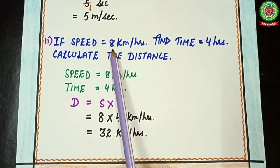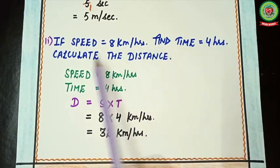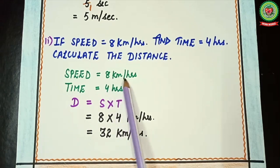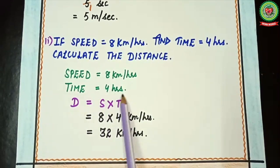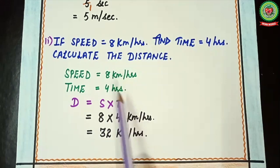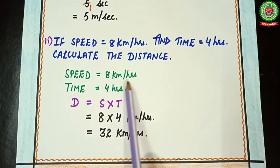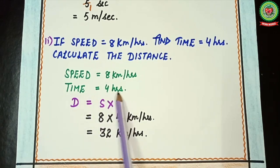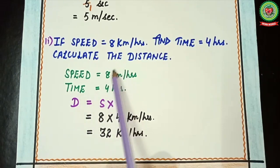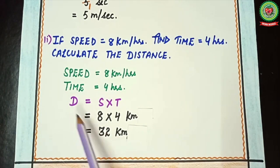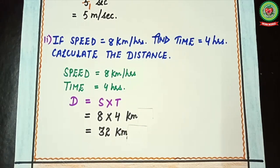Second example: if speed equals 8 kilometer per hour and time equals 4 hours, calculate the distance. Given: speed = 8 km/h, time = 4 hours. Distance = speed multiplied by time = 8 multiplied by 4. The unit for speed is km/h and time is in hours, so distance will be in kilometers. 8 multiplied by 4 equals 32 kilometers.